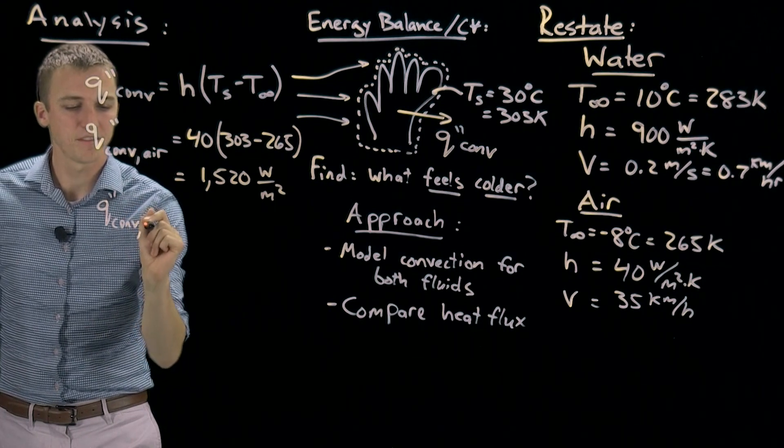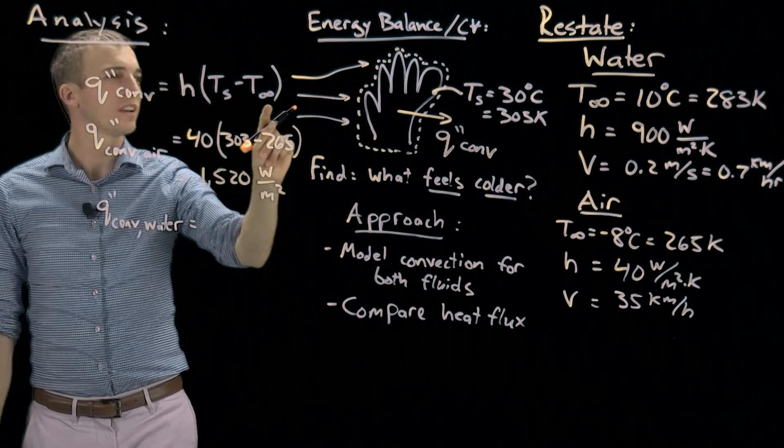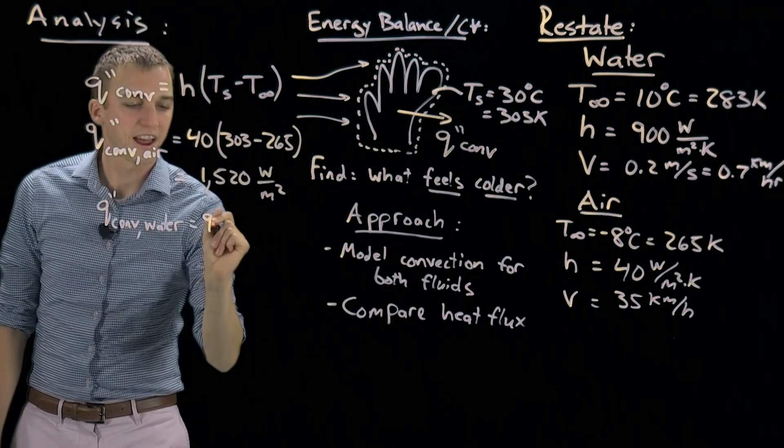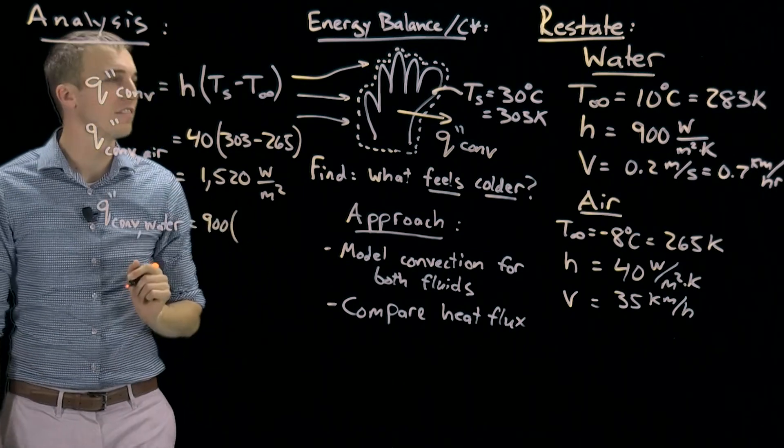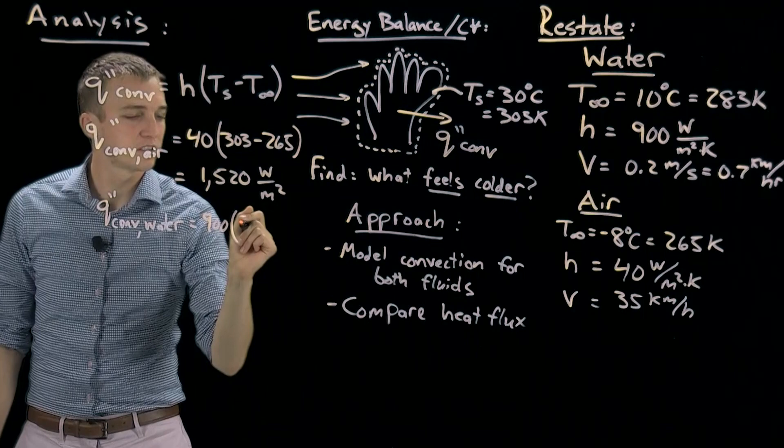We again use Newton's law of cooling, but we plug in values for water. So we have 900, a much larger convection coefficient, times the temperature of our surface.